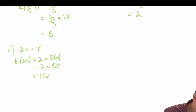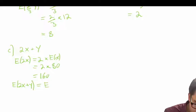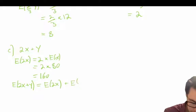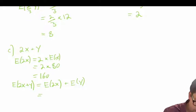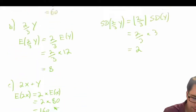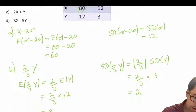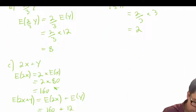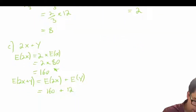From there, the expected value of 2X plus Y is equal to the expected value of 2X plus the expected value of Y. Our expected value of 2X we've calculated — that's 160 — plus the expected value of Y, which is given to us as 12. So our expected value of 2X plus Y is equal to 172.